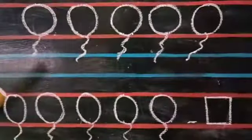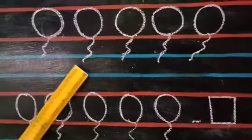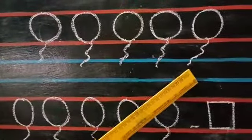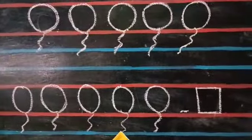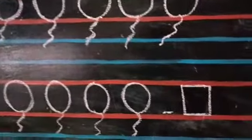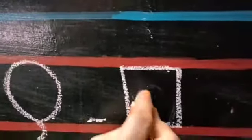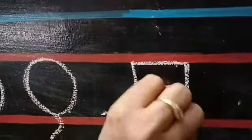We have extra balloons here children. Shall we count? 1, 2, 3, 4, 5, 6, 7, 8, 9, 10. I am going to write 10.